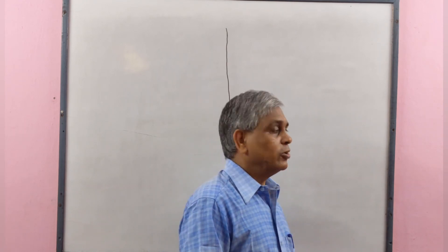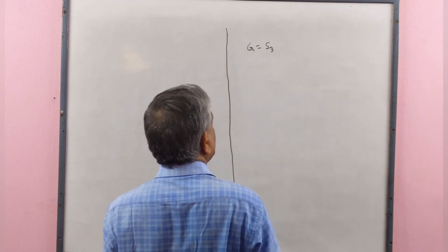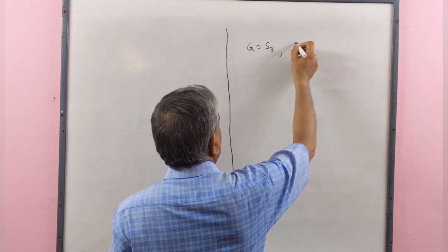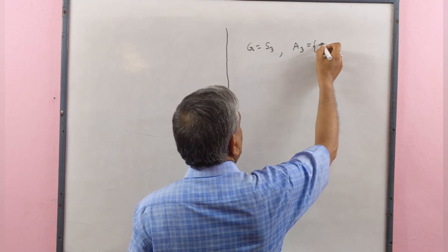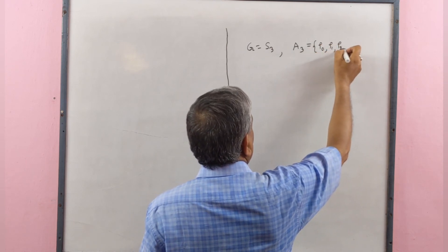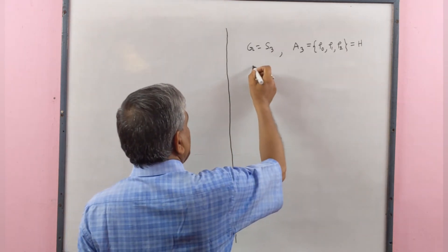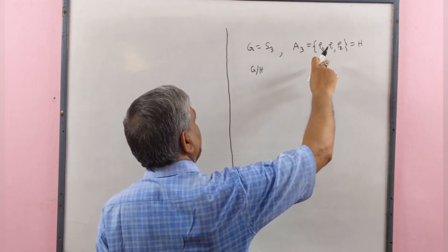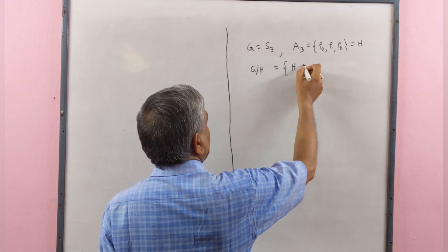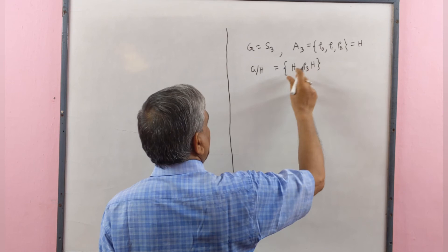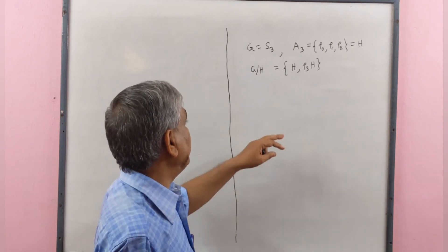We know that G by H is a group and here we get G by H is commutative, therefore G by H is a commutative group. If G is a commutative group then the quotient group G by H is commutative, but the converse is not true. By an example we will describe this: let G equal to the symmetric group S₃.